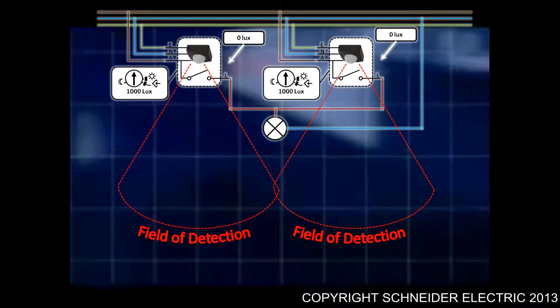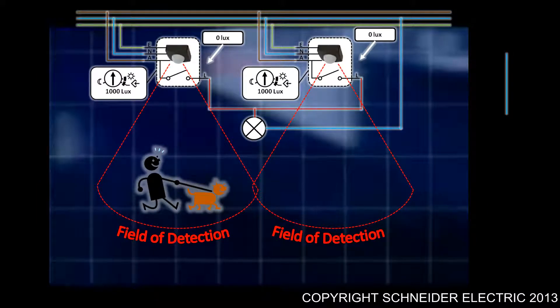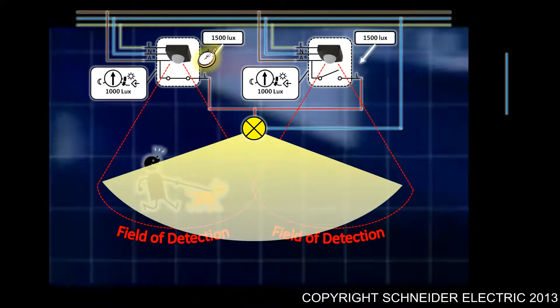Something else you need to take into consideration when positioning sensors is how you position sensors that are paralleled, controlling the same load, where the load is influencing the field of detection for both sensors. In this particular example, I have two sensors controlling a single load, and that load is in the area of the field of detection for both sensors. If I move into one of those areas, because there's not enough light, and both sensors are set to 1000 lux, because there is insufficient light and the sensor has detected movement, it turns the light on and starts its own internal timer.